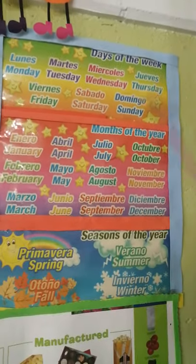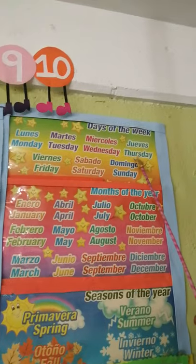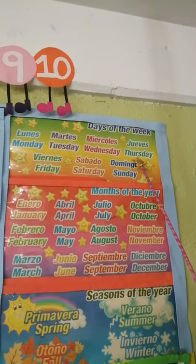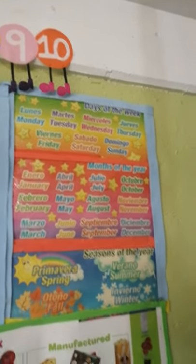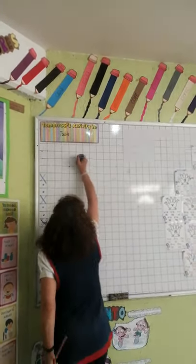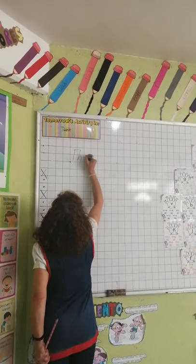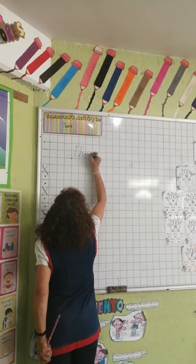What day is today, kids? You know. Excellent. Today is Thursday. We are going to write on the board the day of the week. Today is Thursday. We are going to write here the word Thursday.